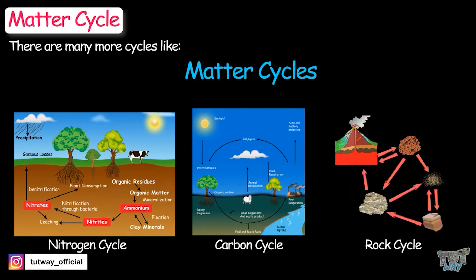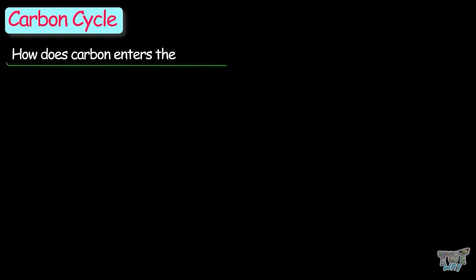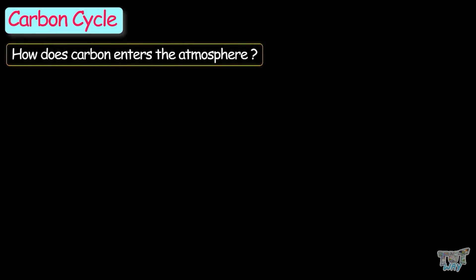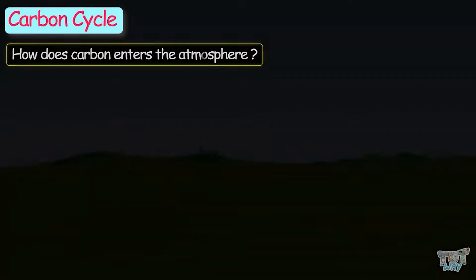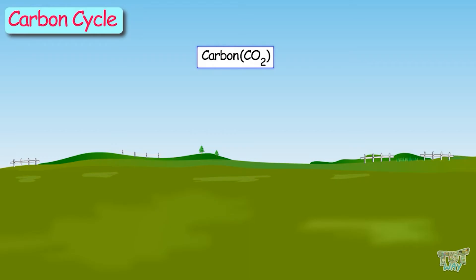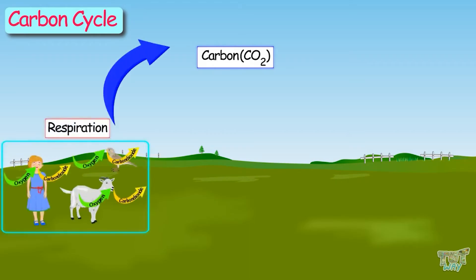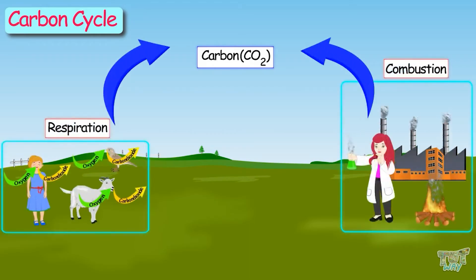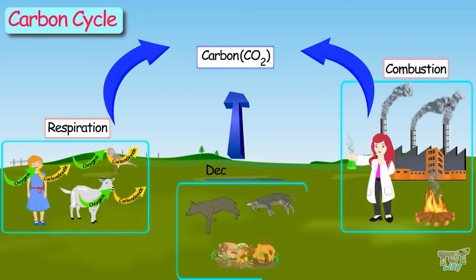In this assignment, we will be learning about the carbon cycle. First of all, how does carbon enter the atmosphere? Carbon enters the atmosphere as carbon dioxide from three sources: respiration, combustion, and decomposition.